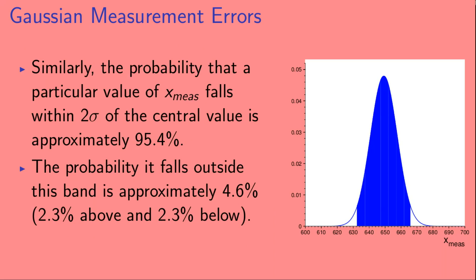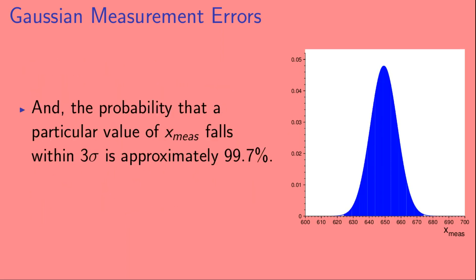Similarly, the probability that a particular value of x_meas falls within two sigma of the central value is approximately 95.4%. The probability that it falls outside this band is approximately 4.6%, so 2.3% that it falls above the blue band, and 2.3% that it falls below the blue band. And the probability that a particular value of x_meas falls within three sigma of the central value is approximately 99.7%.